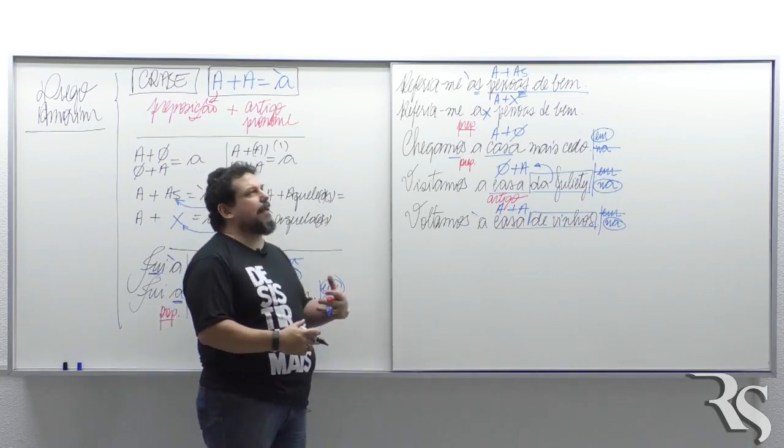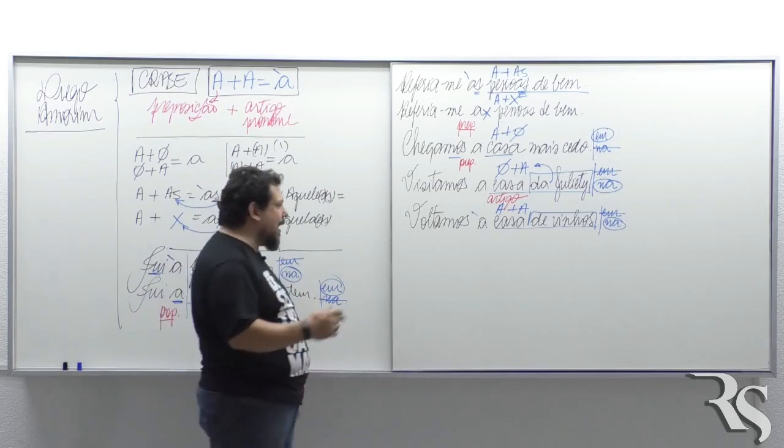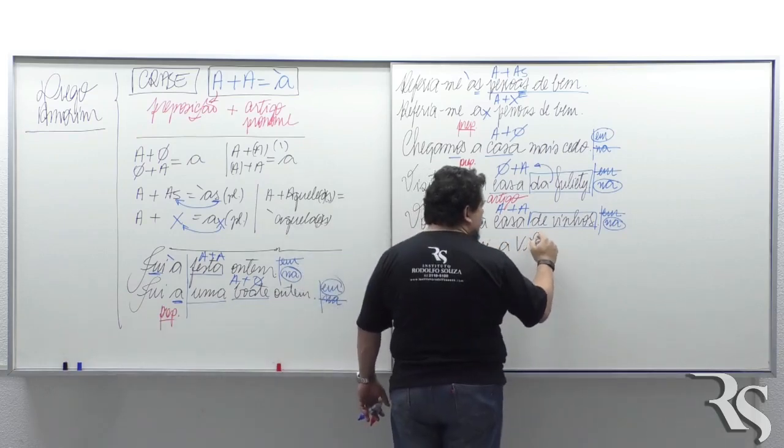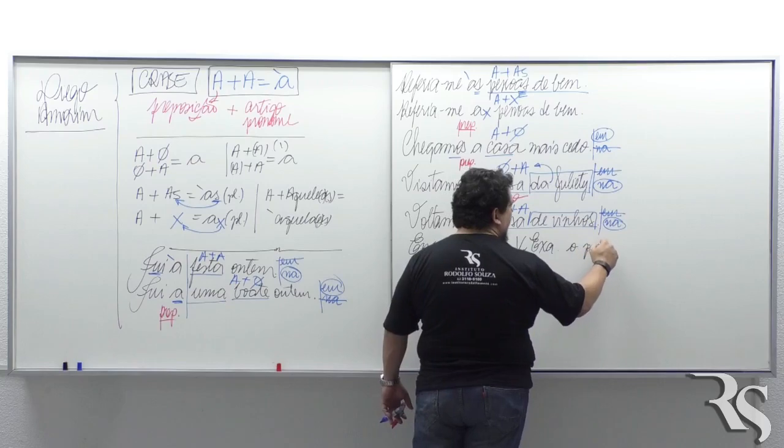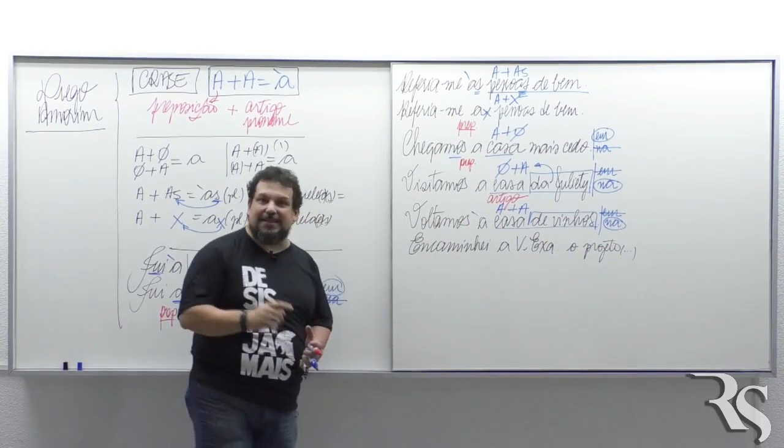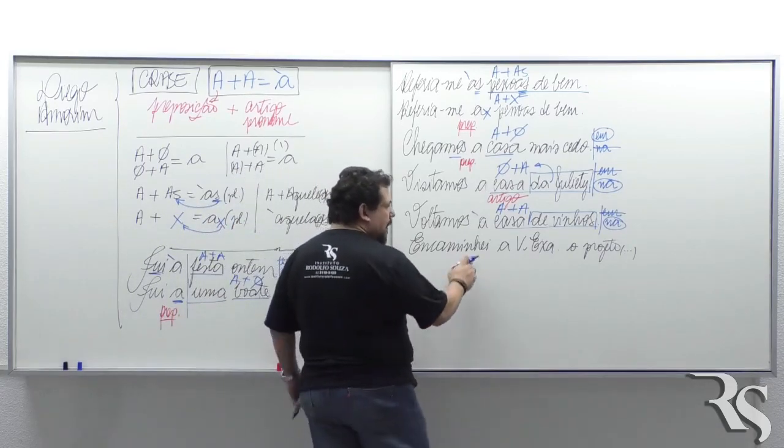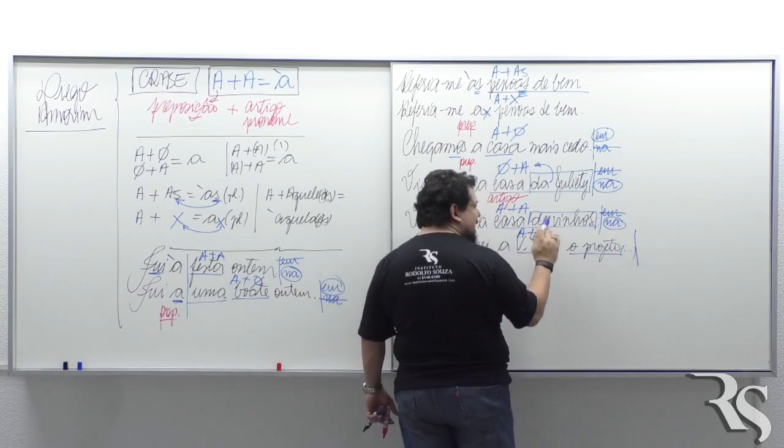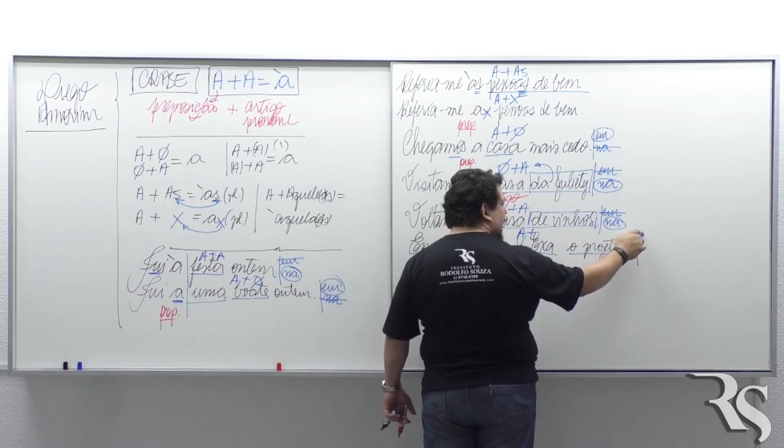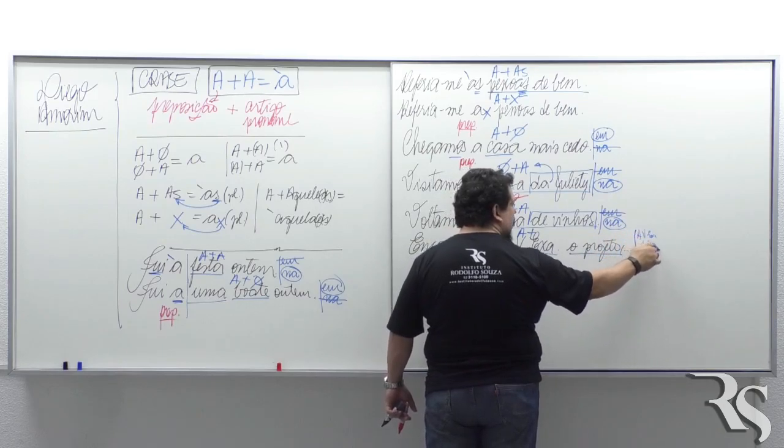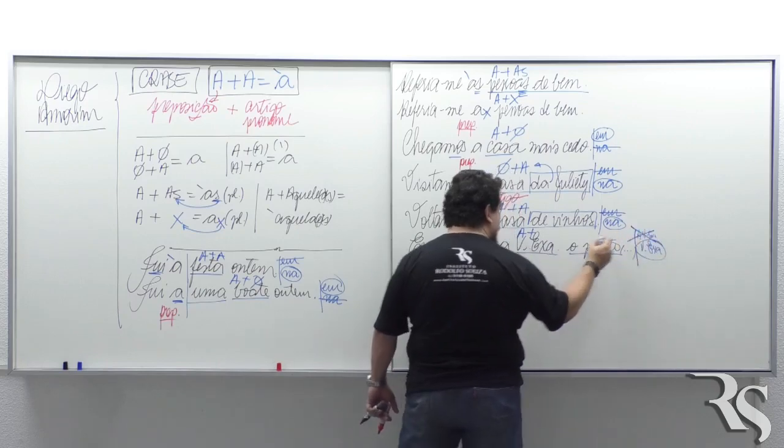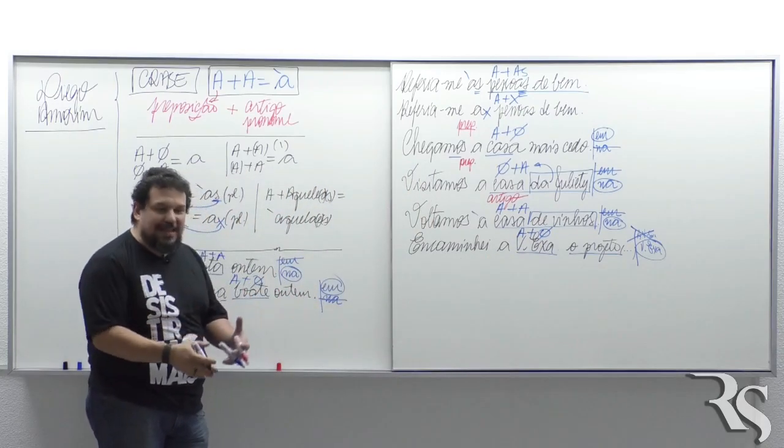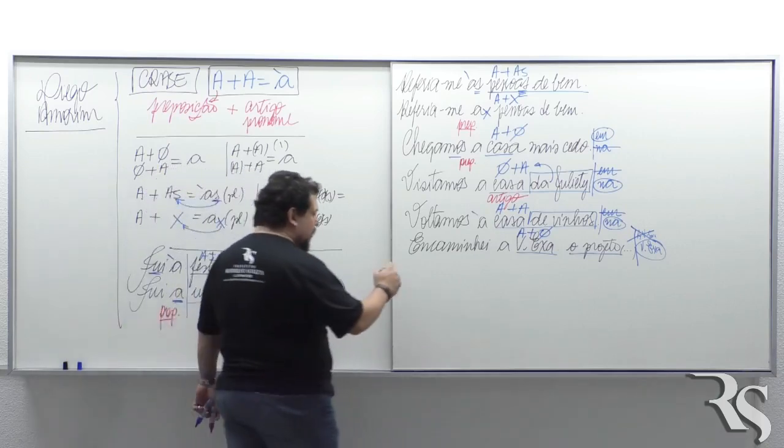Mas tem uns detalhes antes de pronome determinado, não sei o que lá. Esquece isso. Teste A mais A. Encaminhei a vossa excelência o projeto de lei. Quem encaminha, encaminha algo a alguém. A vossa excelência. Aí eu quero saber se a vossa excelência recebe ou não artigo A. Eu falo vossa excelência chegou. Esse A aqui não existe. Não tem A. Não tem crase.